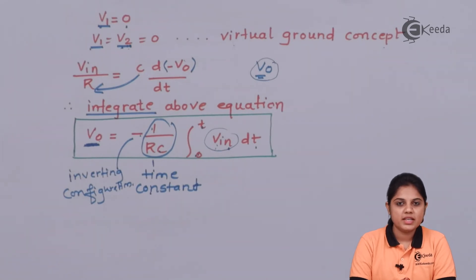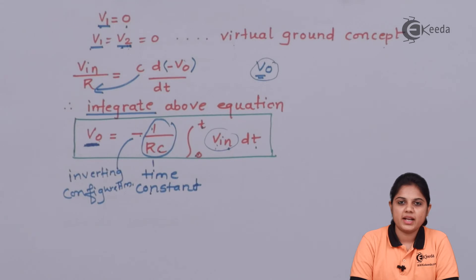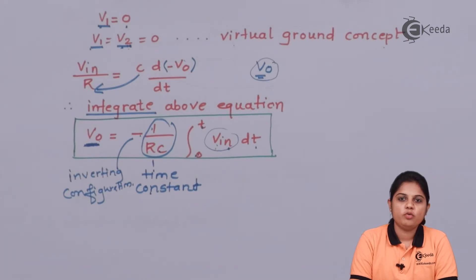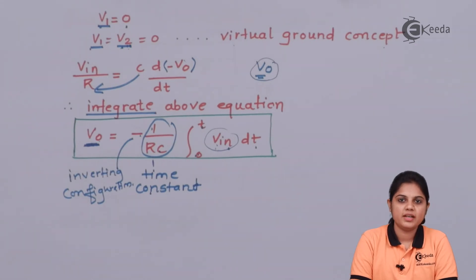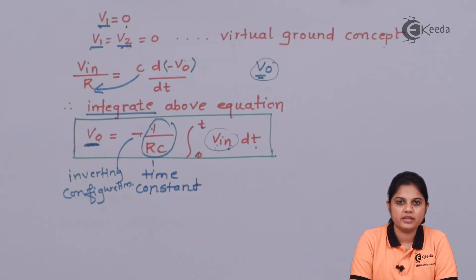If the capacitor is open-circuited, the integrator will act in open-loop configuration. In open-loop configuration, without any input voltage, the op-amp output will be +Vsat or −Vsat. Since we are getting +Vsat or −Vsat as output with no input, that is an error voltage. To avoid this, we use the configuration called a practical integrator, where one resistance is connected in parallel with the capacitor in the feedback path.